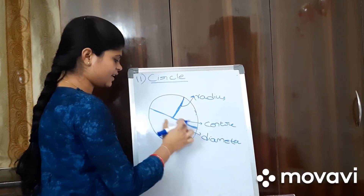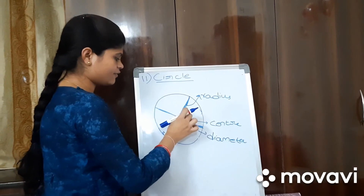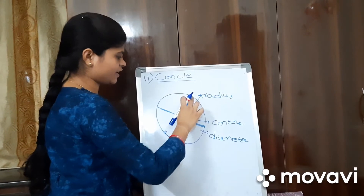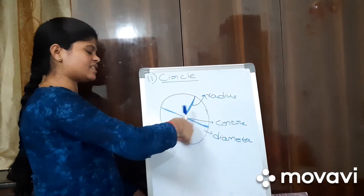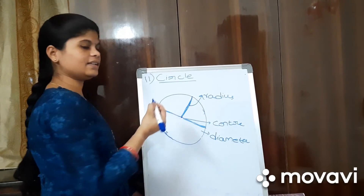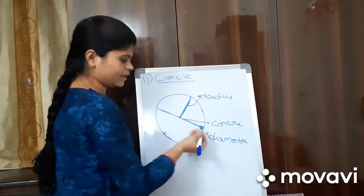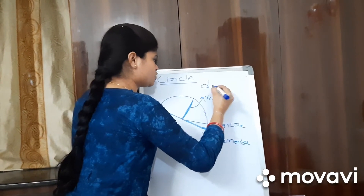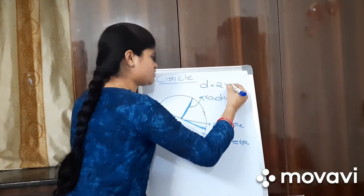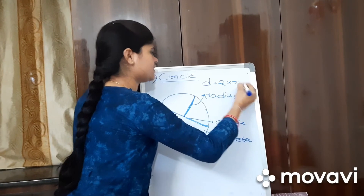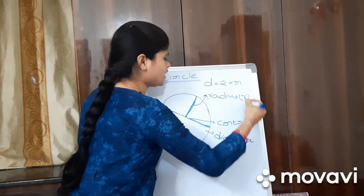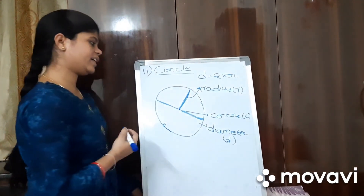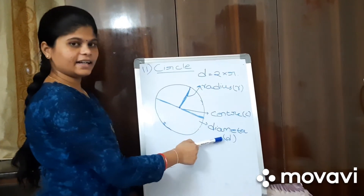Note that half of the diameter is the radius. From the center to any point on the circle, the line drawn is the radius. So, diameter equals 2 times radius — D = 2R. I am representing radius with R, diameter with D, and center with C.